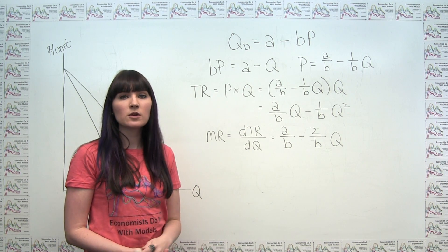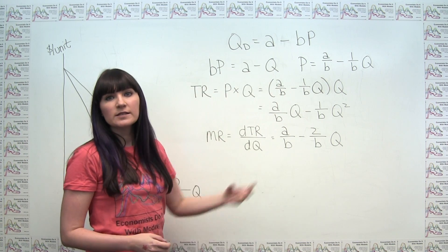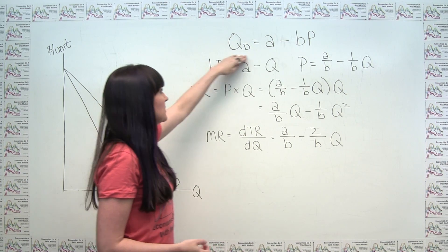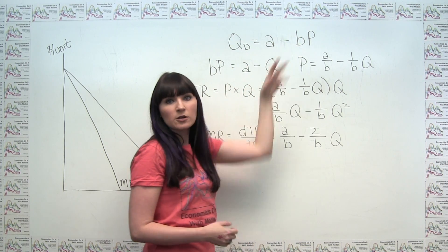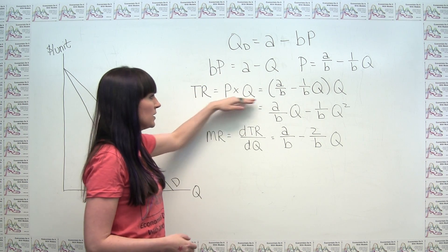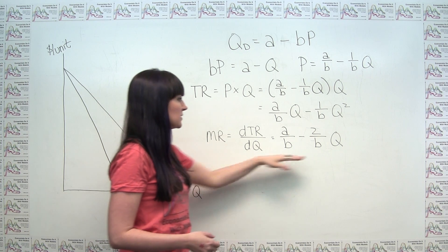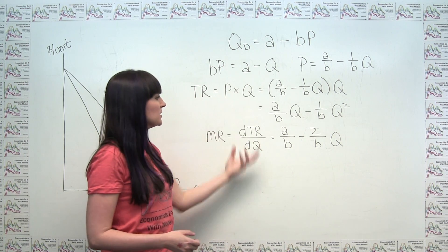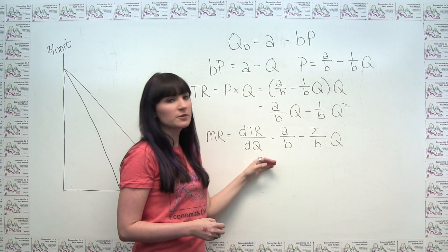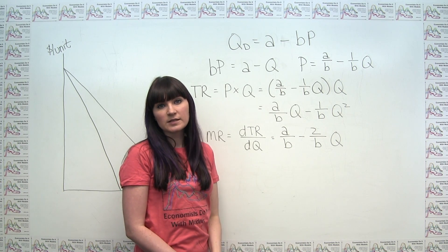This particular result only holds for straight-line demand curves. However, you could extend this to any demand curve: solve for price, plug it into total revenue to get TR only in terms of quantity, and then take the derivative to get marginal revenue. The procedure is the same regardless of the demand curve's form — it's just that non-linear demand curves may require more rules of calculus to complete.